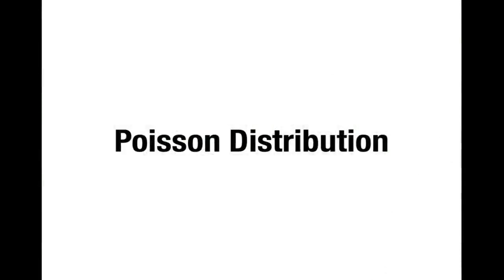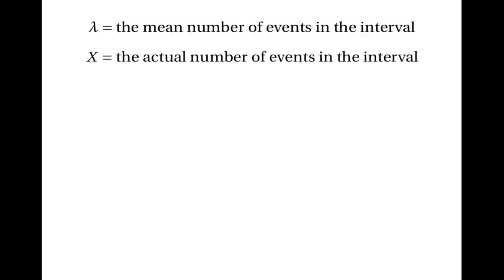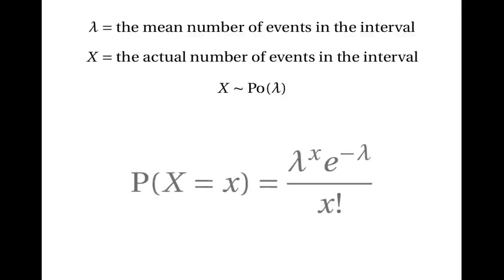To calculate probabilities in a Poisson distribution, we use the letter lambda to represent the mean number of events that happen in the interval — the number of events you'd expect on average. If the random variable X is the actual number of events that occur in the interval, we write that X follows the Poisson distribution with parameter lambda. The probability of having X events is lambda to the power of X, times e to the power of minus lambda, divided by X factorial. In this formula, e is the base of natural logarithms and is approximately equal to 2.718.